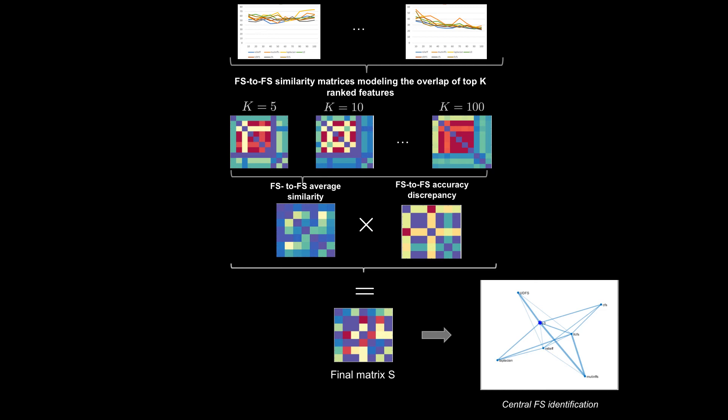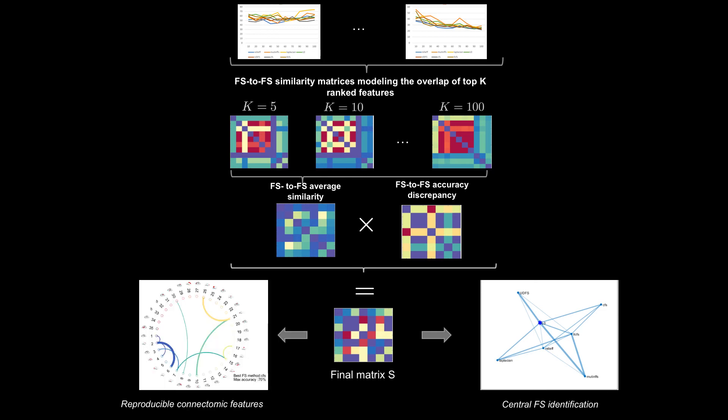By finding the node in S with the highest centrality, we find the best FS method. Finally, we use the selected FS method to identify the most discriminative and reproducible brain connections, disentangling two brain states.